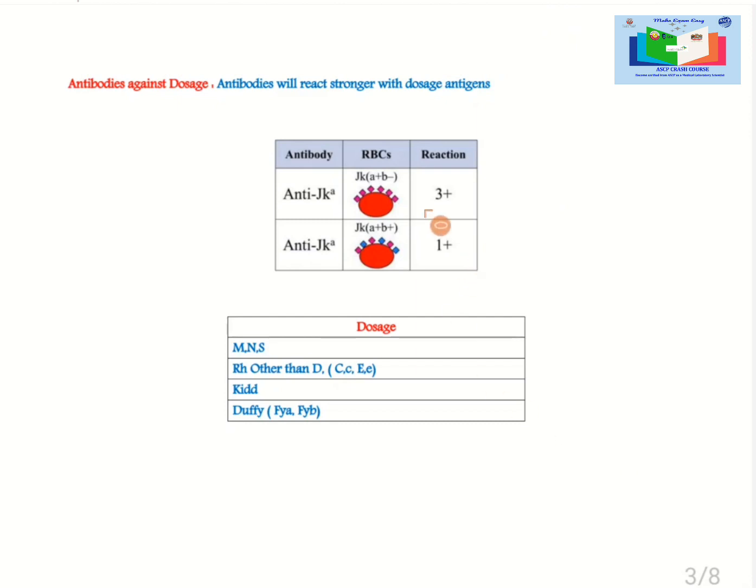If we look into the antibody strength against a double dosage cell, there is a stronger reaction of 3 plus noted with JKA cells. This is basically due to the presence of sufficient number of antigen sites available for antibody binding.